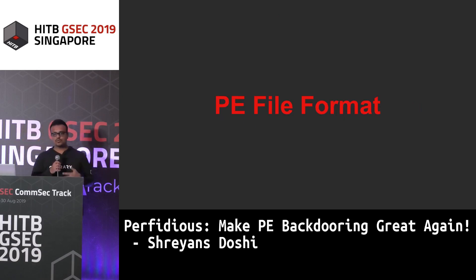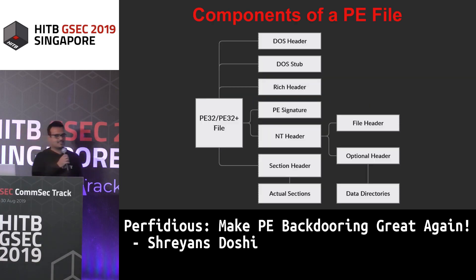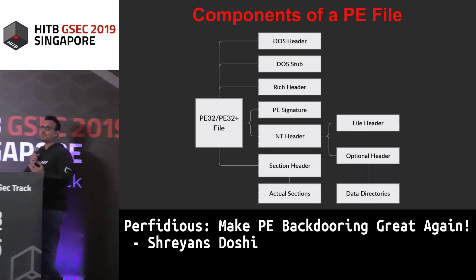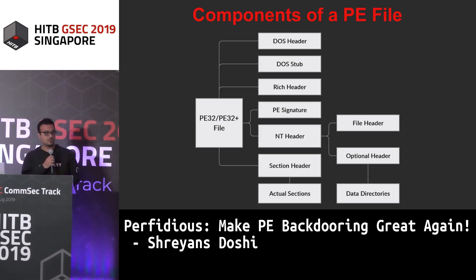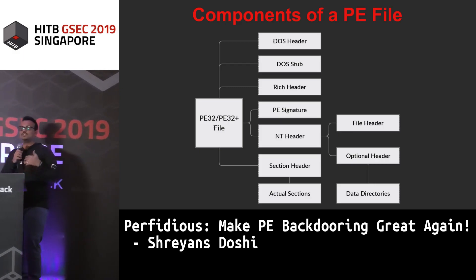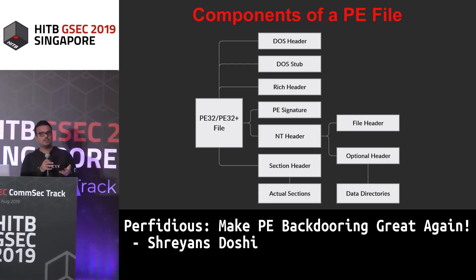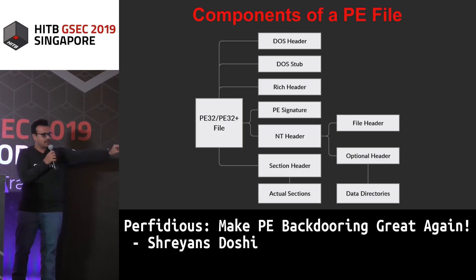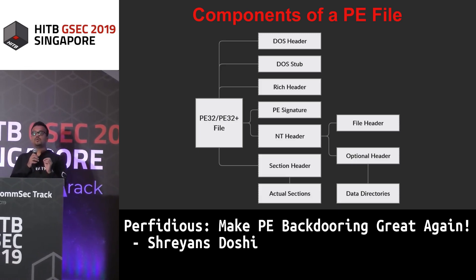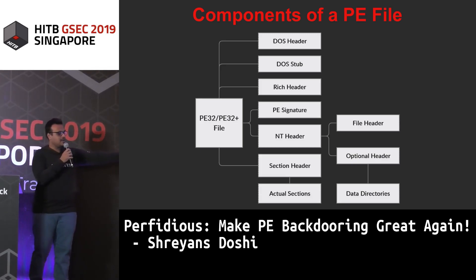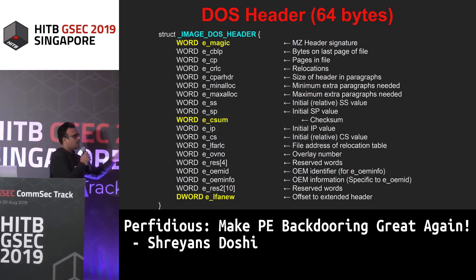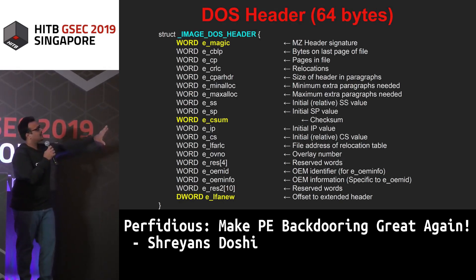Before we get into PE backdooring techniques, it's a good idea to have a refresher on what the PE file format looks like. This is an overview: a PE file has a DOS header, a DOS stub containing the 'This program cannot be run in DOS mode' message or a complete DOS program, and may or may not have a rich header — which was until 2017 an undisclosed Windows header. It also has the PE signature and the NT header composed of the file header and optional header.